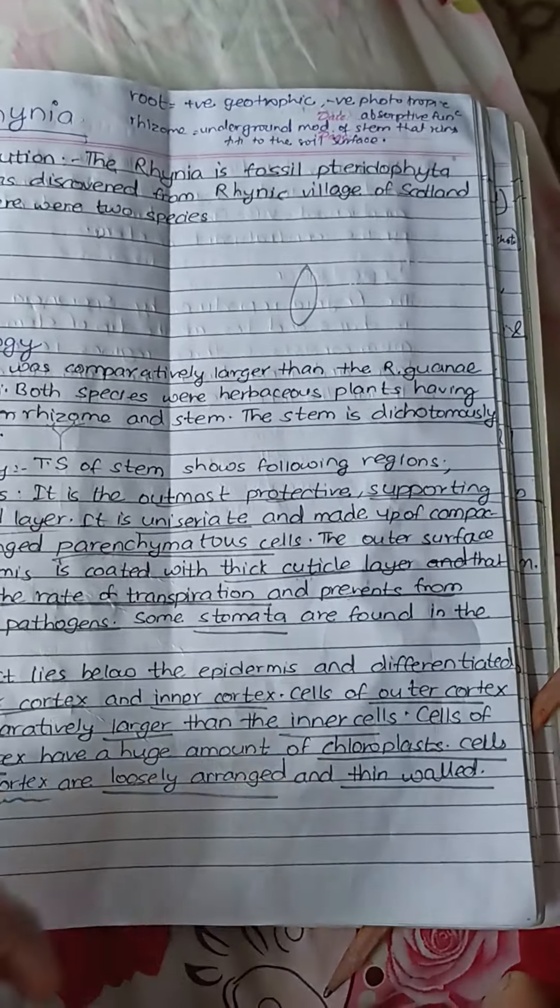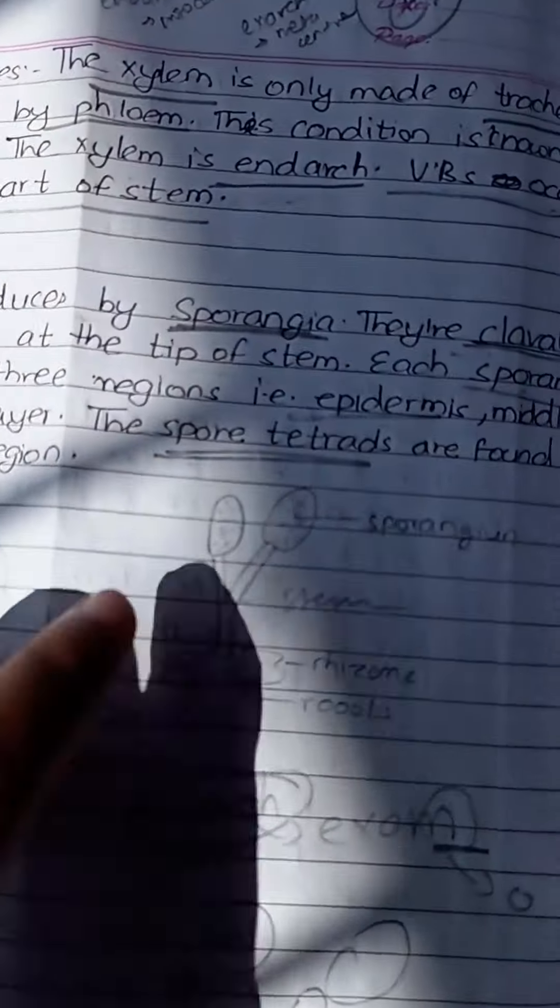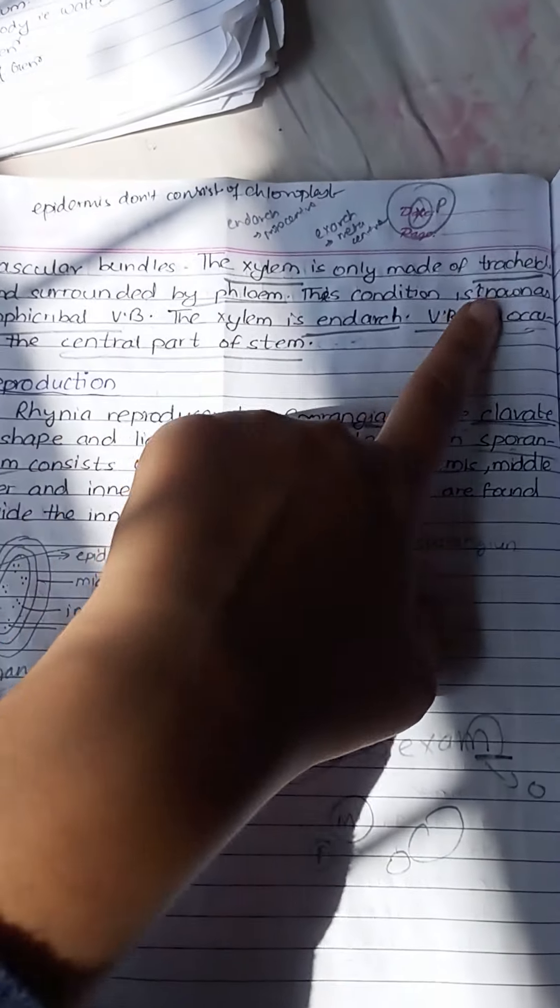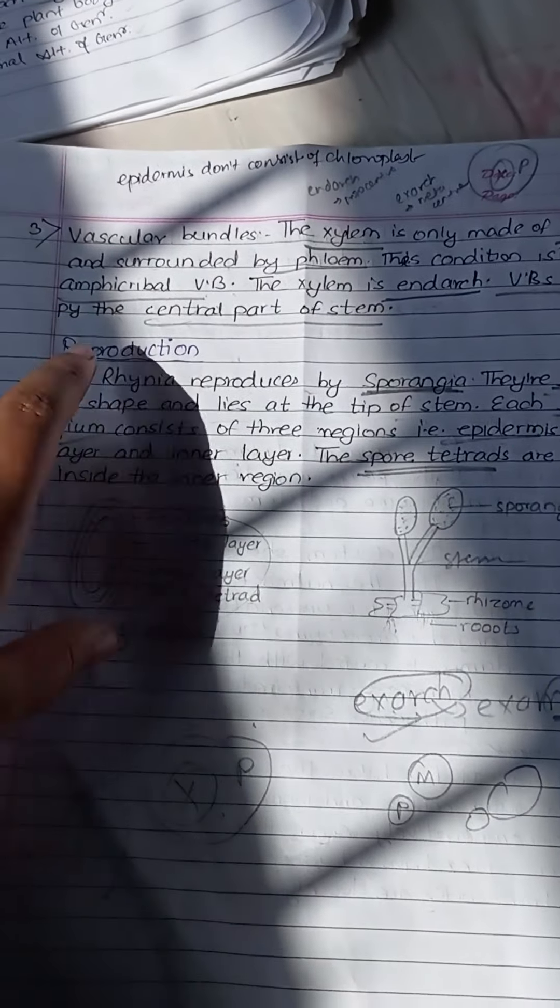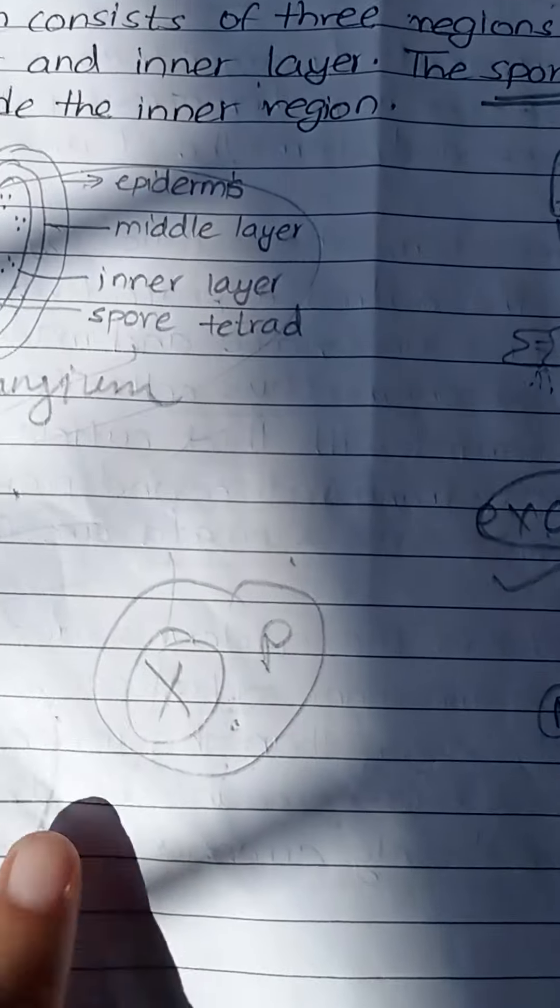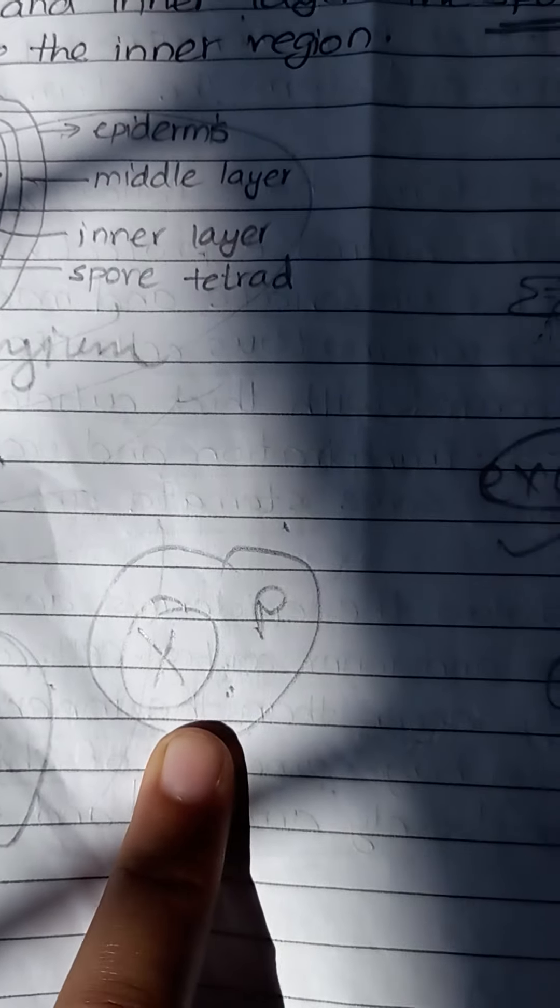It's called vascular bundle. Vascular bundle is only made up of xylem. It's surrounded by phloem. This is called vascular bundle. Hadrocentric and amphicribral vascular bundle.